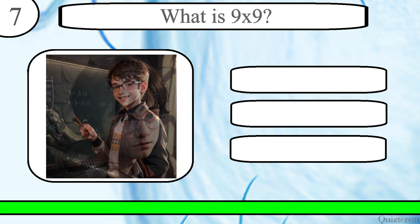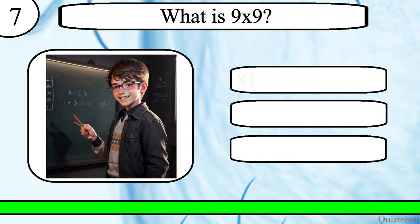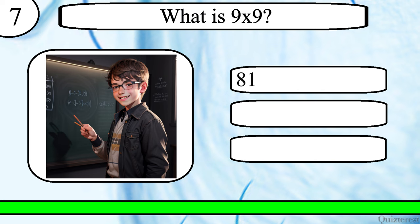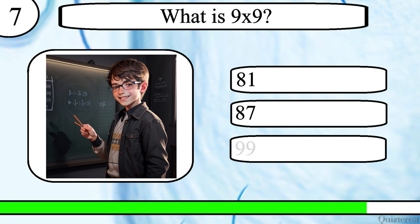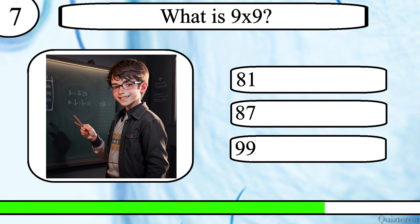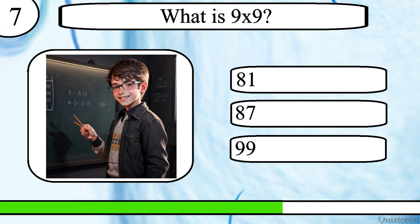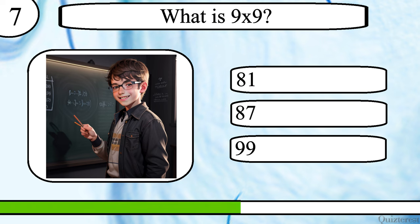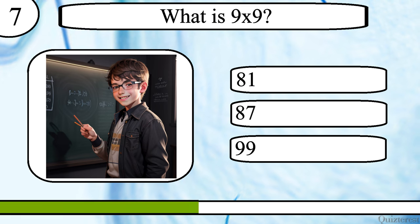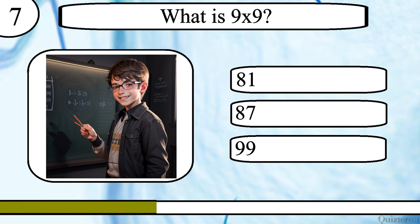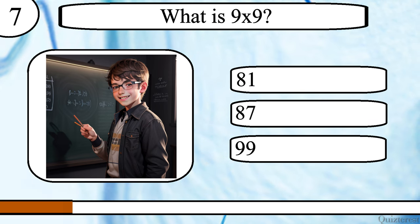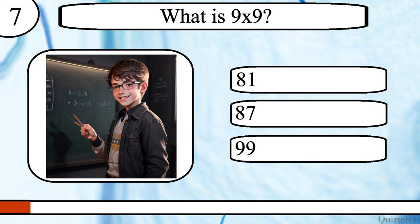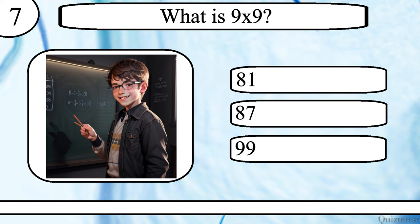Question 7. What is 9 times 9? 81, 87, or 99? The correct answer is 81.